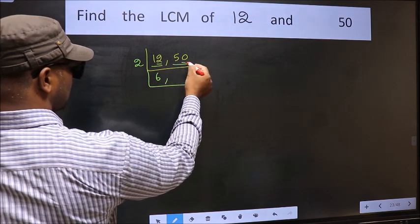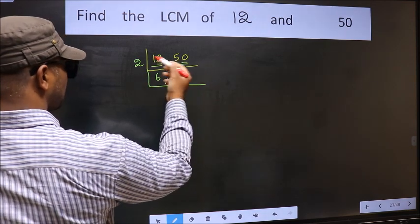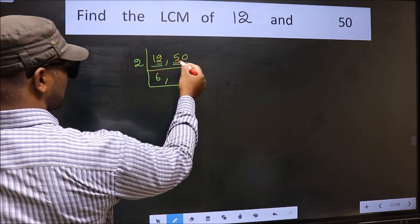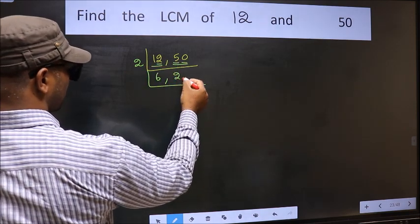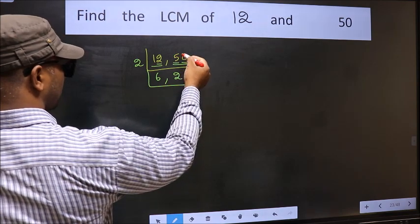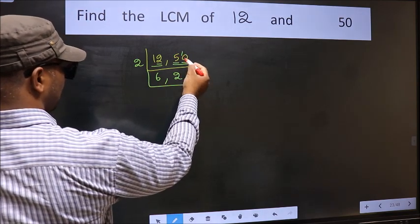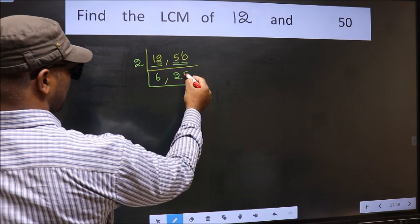Now the other number 50, last digit 0, so this is divisible by 2. First number 5. A number close to 5 in the 2 table is 2 times 2 is 4. 5 minus 4, 1, 1 carried forward 10. When do we get 10 in the 2 table? 2 times 5 is 10.